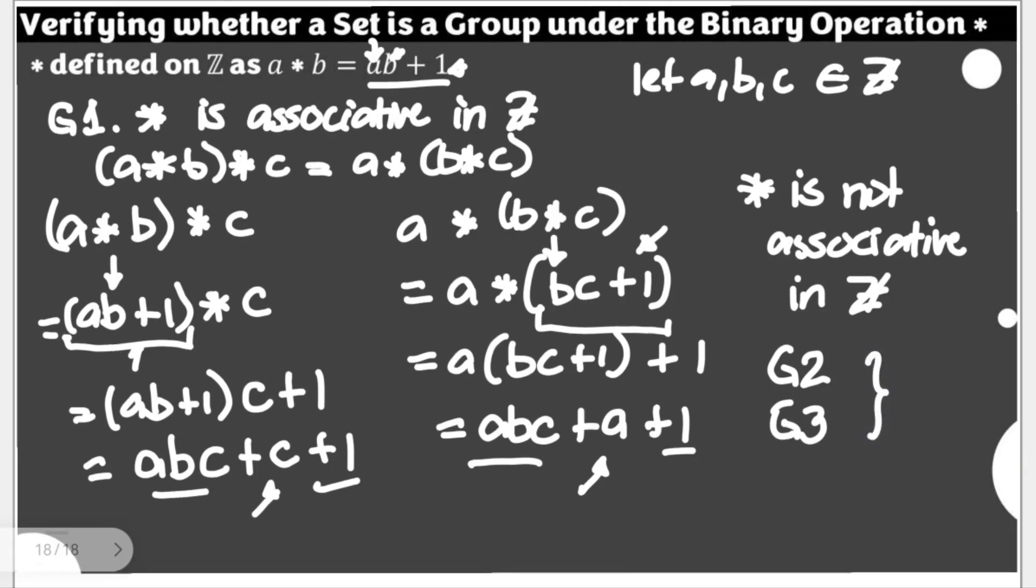So no need for this, because since we are verifying whether this is a group and the first condition has not been met, then we can say that Z is not a group under the given star operation defined as A star B is equal to AB plus 1. So again, in this case, it's not a group and no need to proceed to G2 and G3.